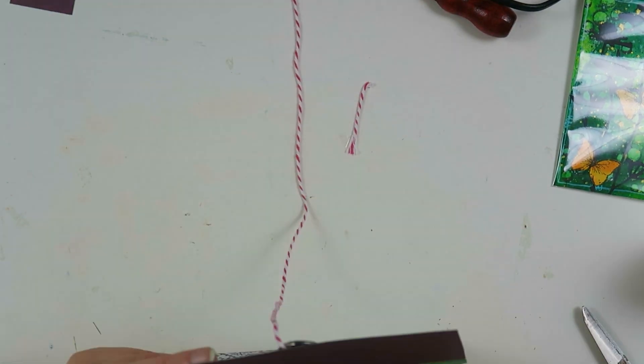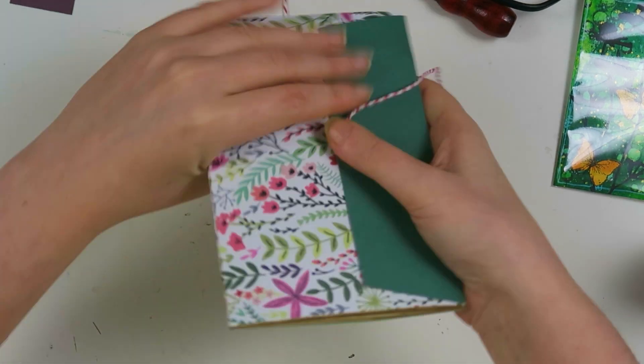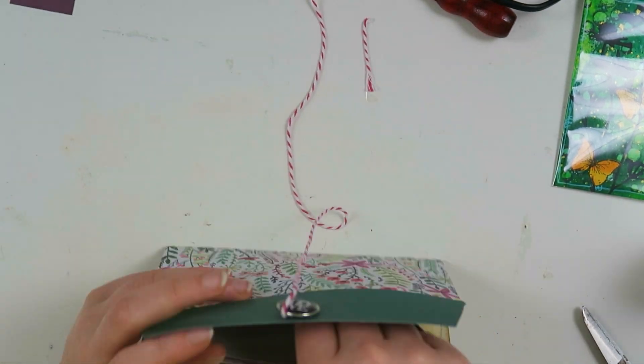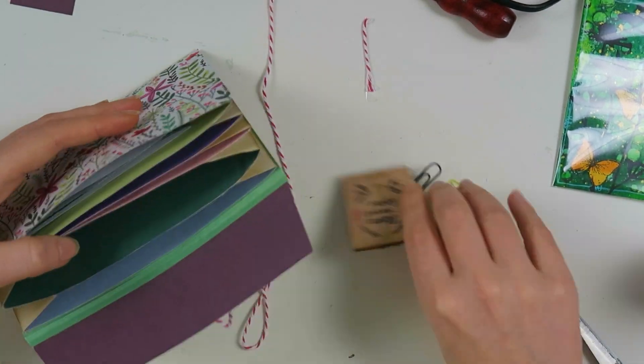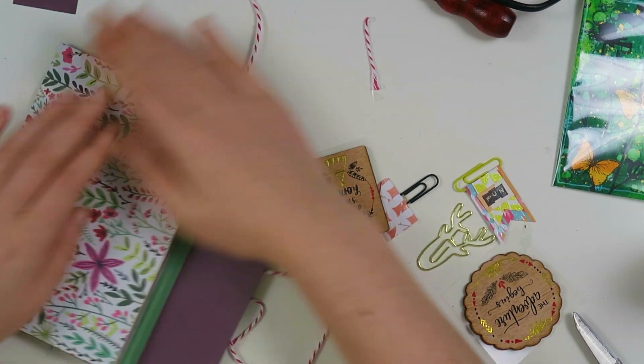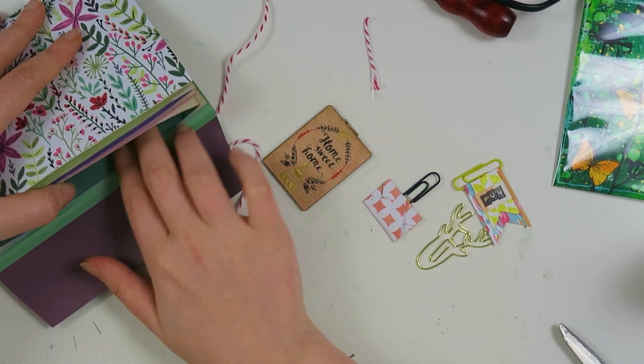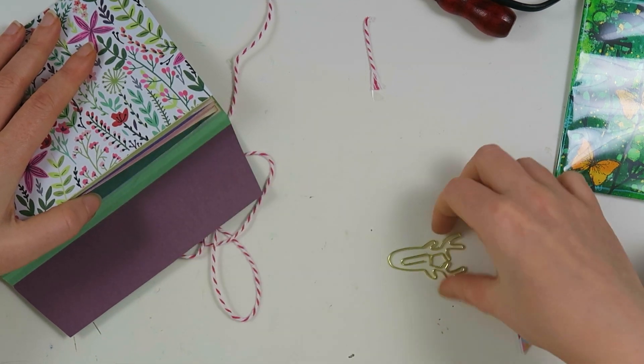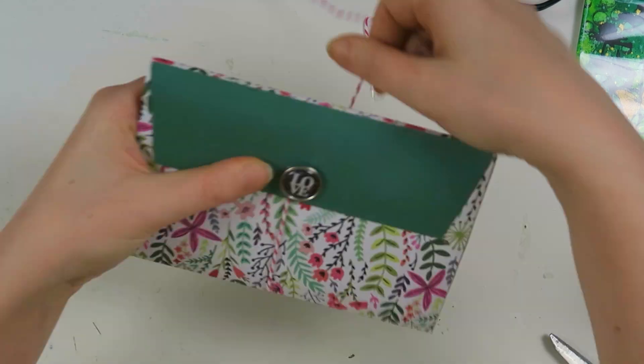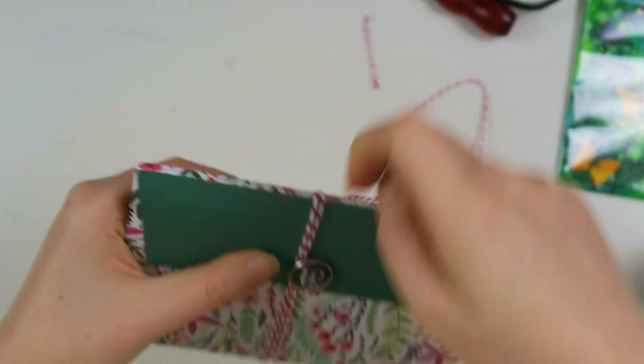I think that's it for this accordion folder. As you can see you can add a lot of stuff in there and just close it up. I try to make it as flat as possible because I'm going to mail it. But if you don't mail it, it doesn't really matter. I added some dimensional pieces because why not, I'm a rebel like that. Now I'm going to close it up.